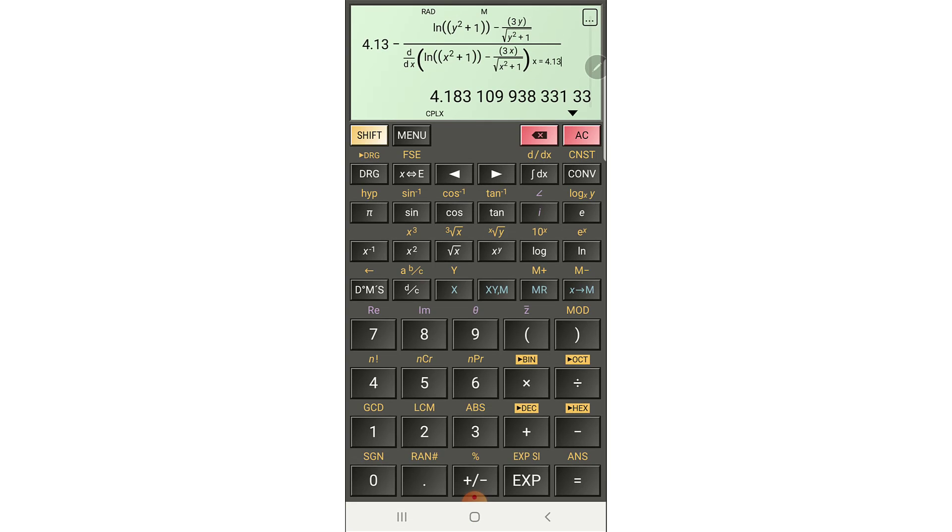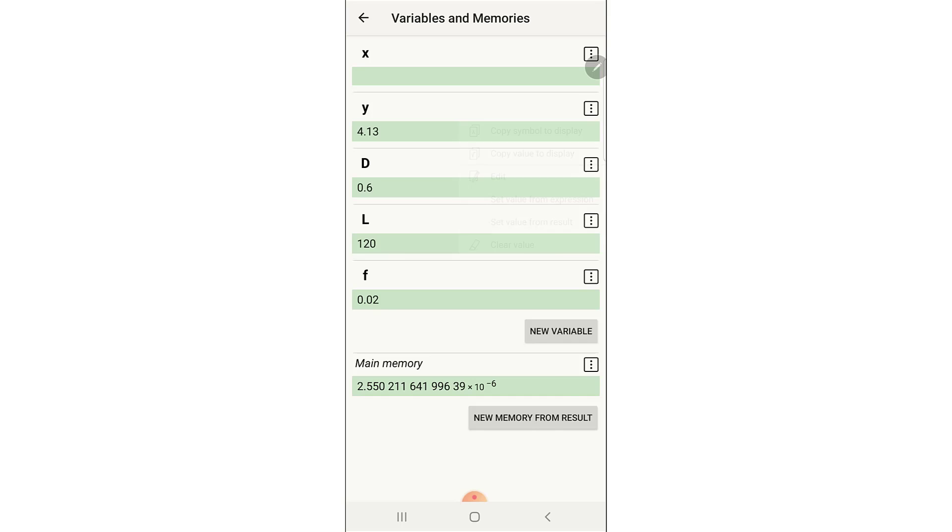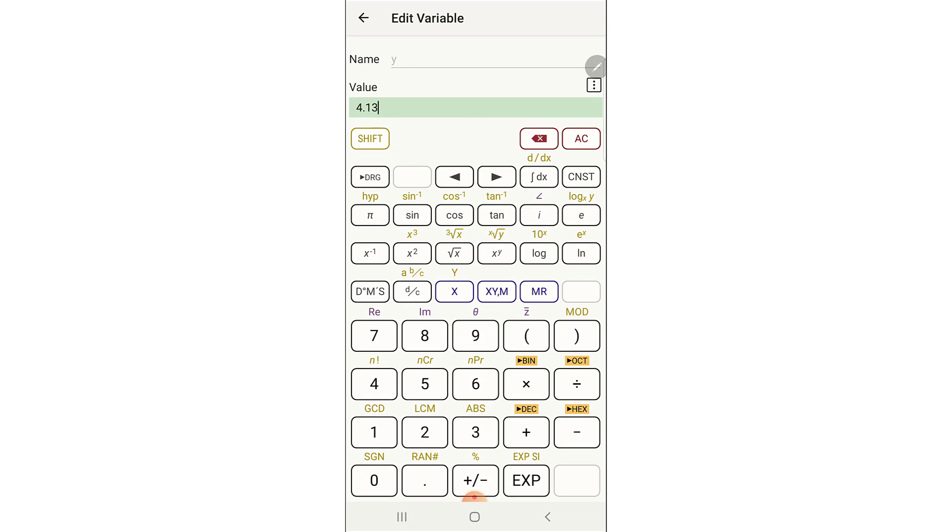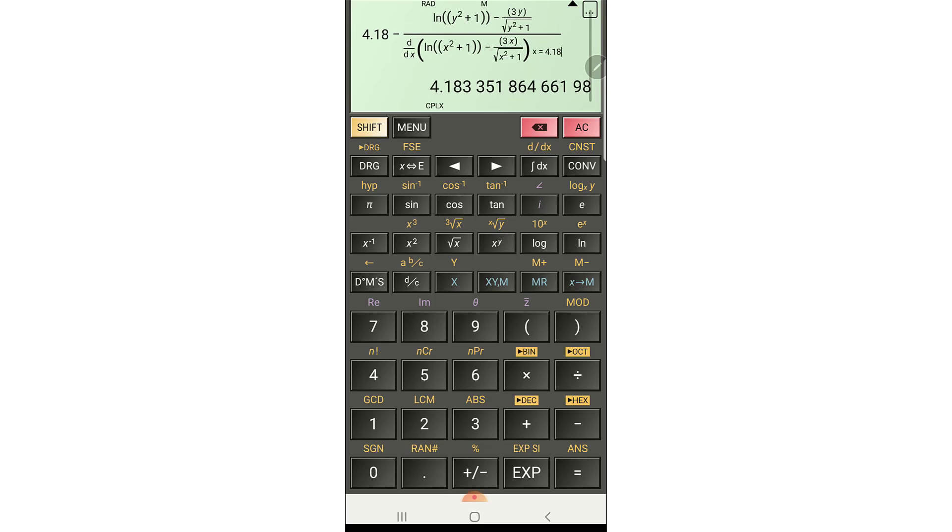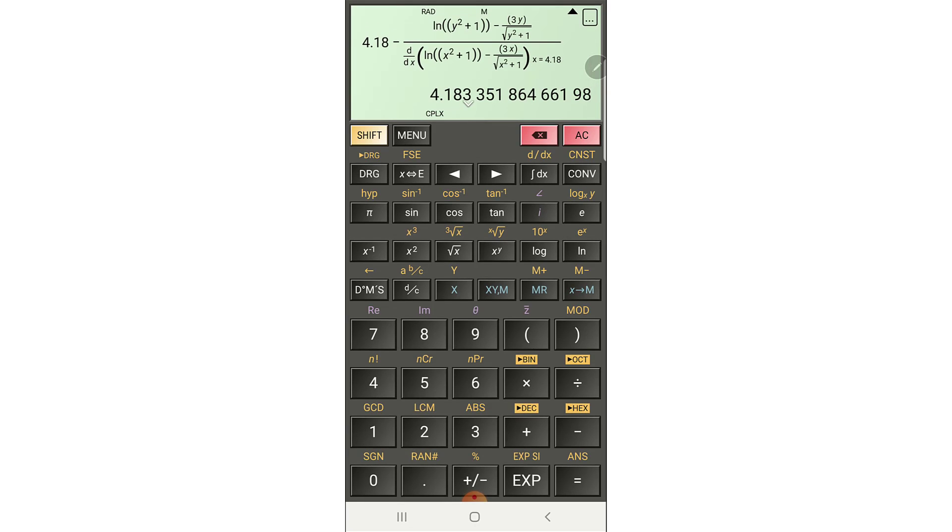Okay this is the third x that we get from Newton's method 4.18 so I just put 4.18 here, 4.18 for the numerator, 4.18. You see the fourth value is again 4.18 and that means that Newton method converges to the root.